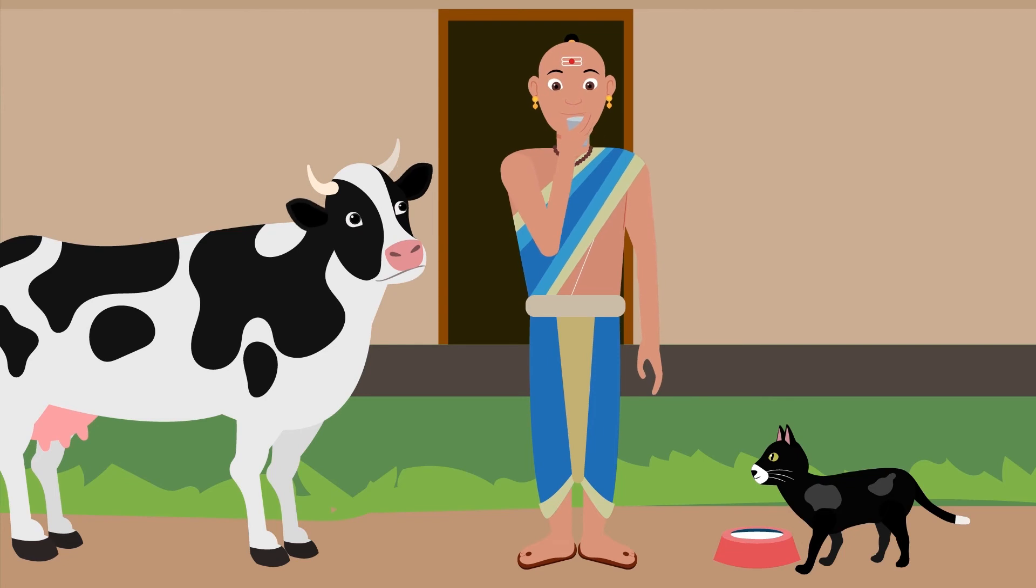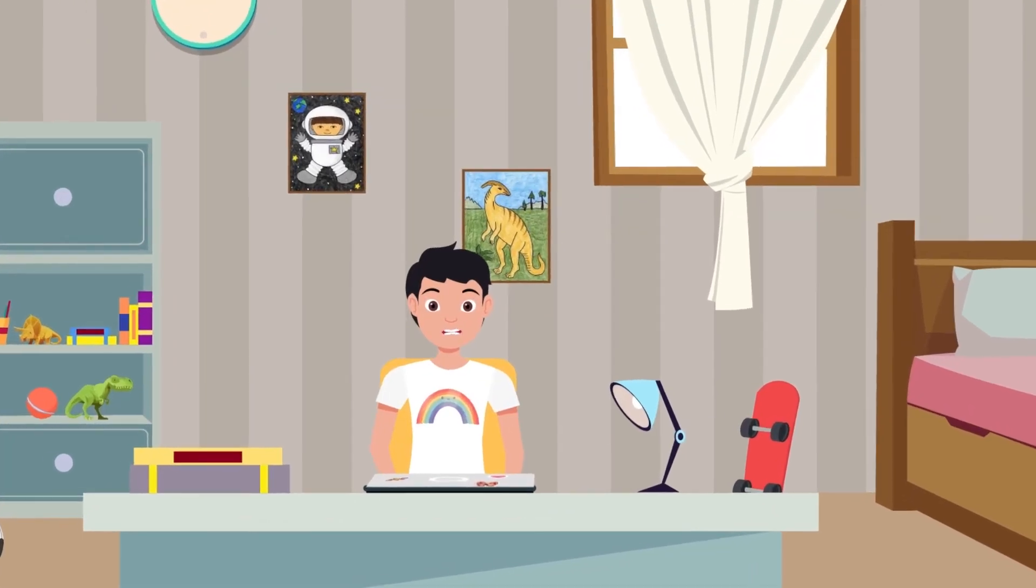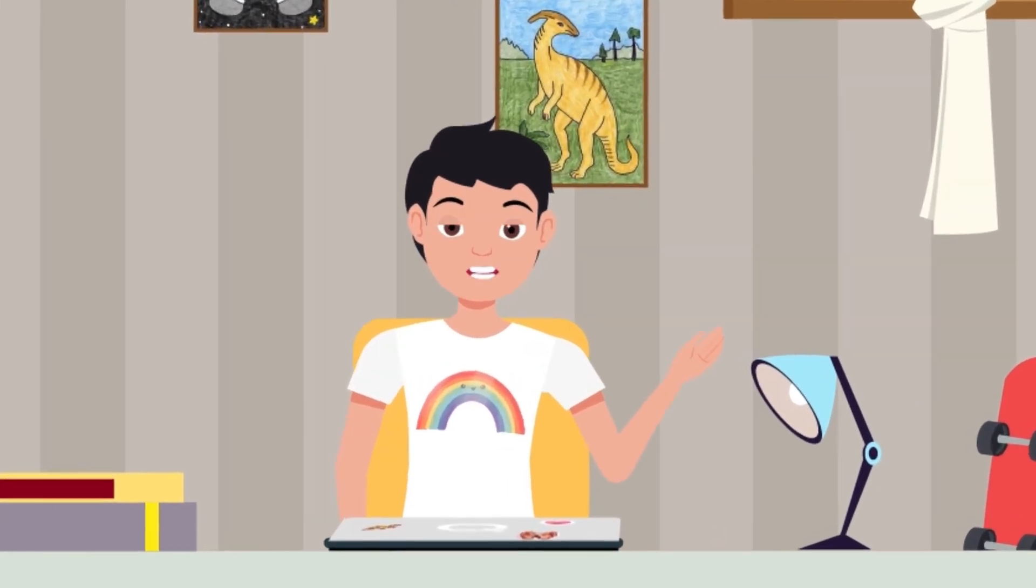Instead of starving and hurting the cat, he could have easily shared the milk with the cat. It's important to be kind and understanding to all animals as well as people.